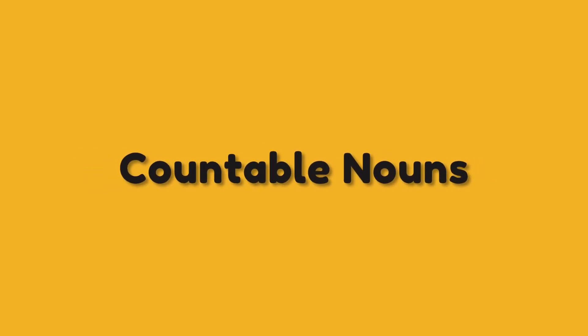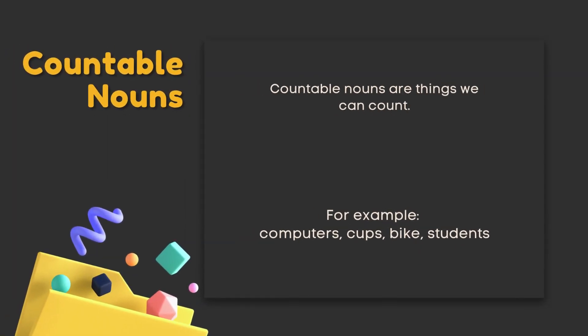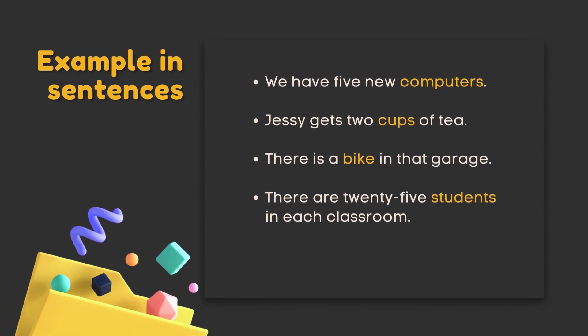Countable nouns are things we can count. For example: computers, cups, bike, students. Example in sentences: We have five new computers. Jesse gets two cups of tea. There is a bike in that garage. There are 25 students in each classroom.